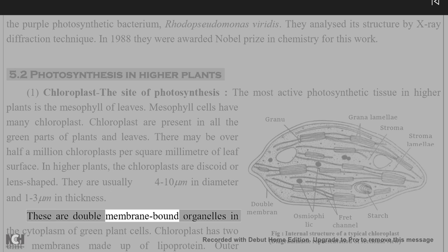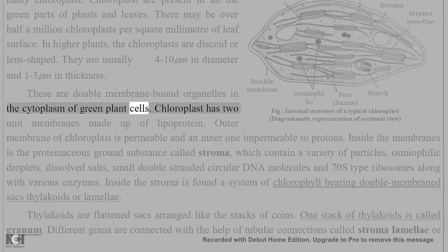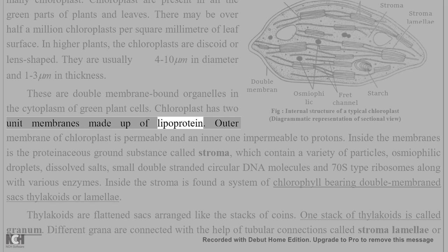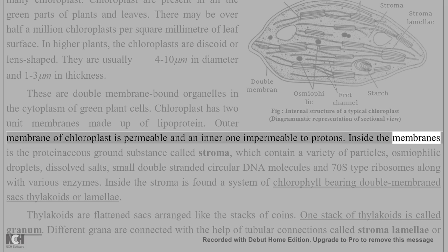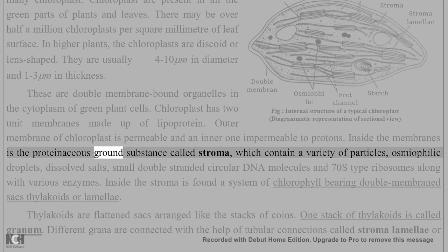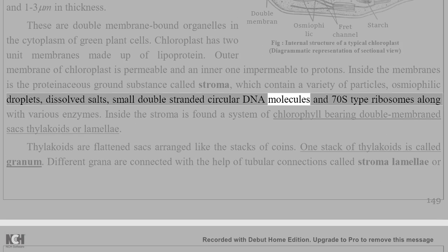Chloroplasts are double membrane-bound organelles in the cytoplasm of green plant cells. The chloroplast has two unit membranes made up of lipoprotein. The outer membrane of the chloroplast is permeable, and the inner one is impermeable to protons. Inside the membranes is the proteinaceous ground substance called stroma, which contains a variety of particles including osmiophilic droplets, dissolved salts, and small double-stranded circular DNA molecules.